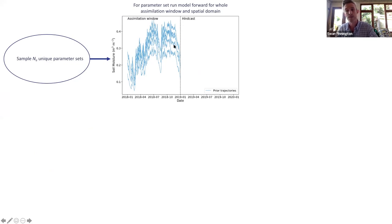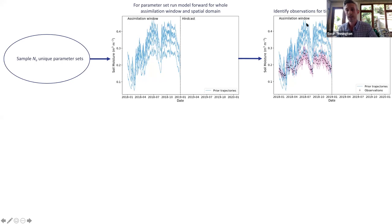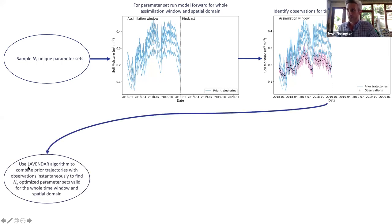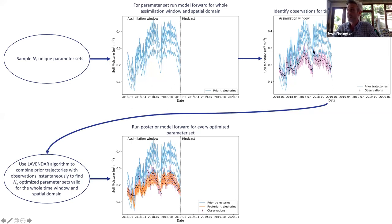We can see different model trajectories depending on what the parameter values are. We then identify the observations we want to combine with these model trajectories to improve the parameters going into the model, covering the whole time window and spatial domain. We're finding parameters that are common for the whole spatial area and the whole time window, so we get lots of constraint from many directions. Then we run LAVENDER and it produces optimized parameters — and the nice thing is, once we've run the initial model ensemble, we can keep doing different data assimilation experiments without having to rerun that ensemble.